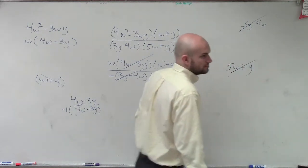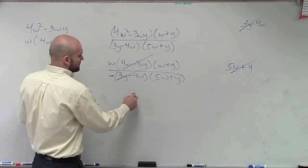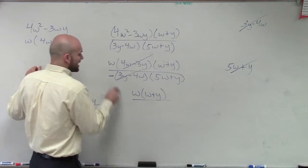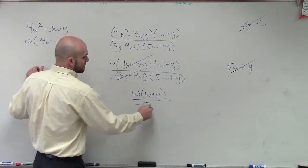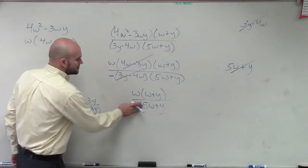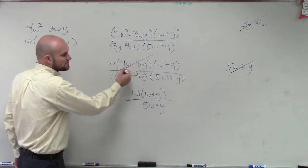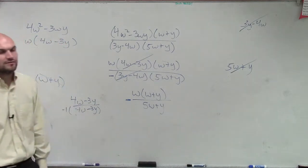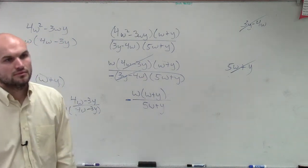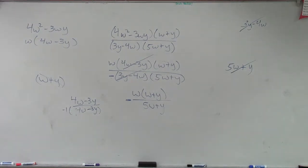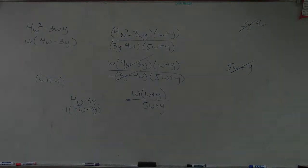Okay. So therefore, w times w plus y divided by, it's now negative, 5w plus y. So now this is the problem. These two terms are able to divide out but now the problems turn from a positive to a negative. Okay? Is that it? That's it. So you make it negative?